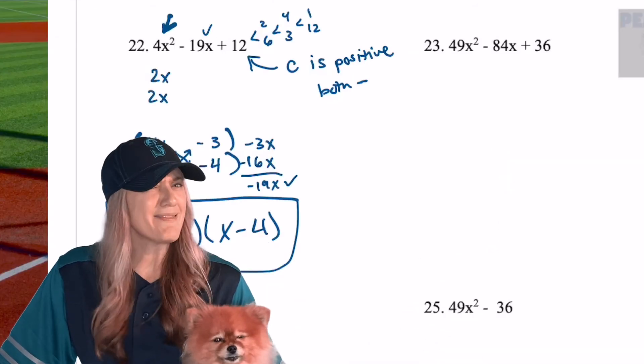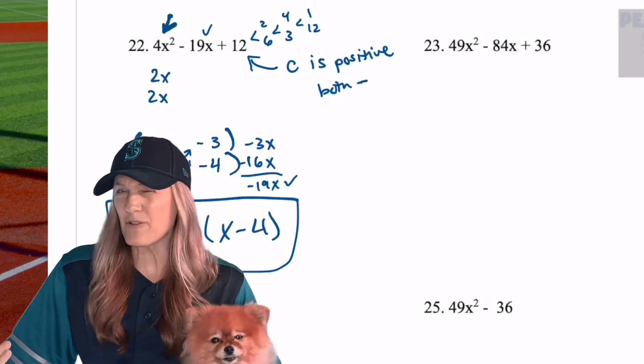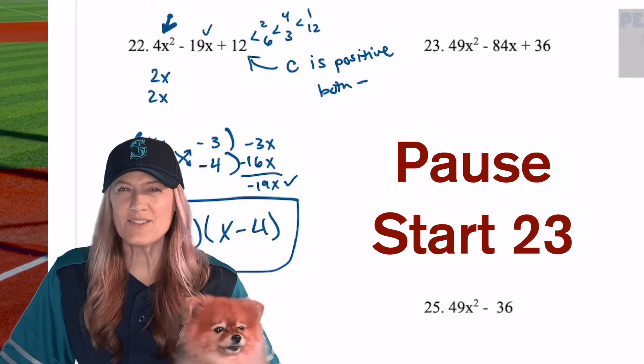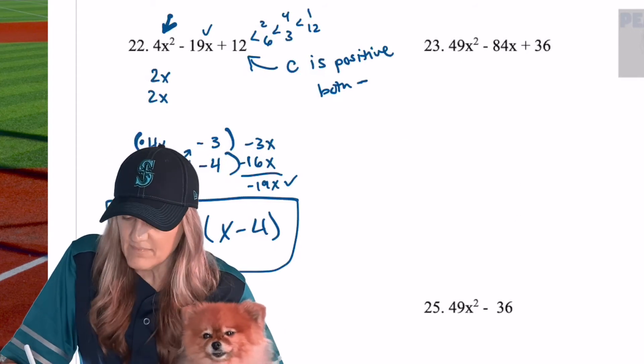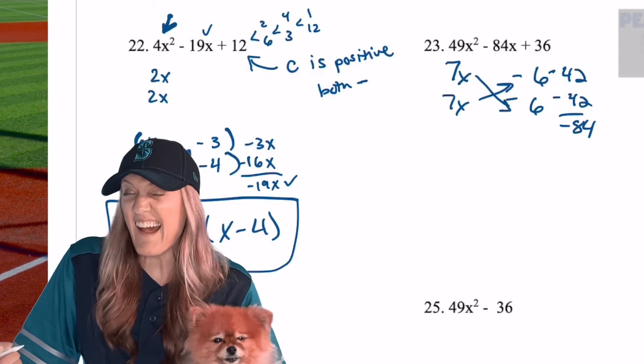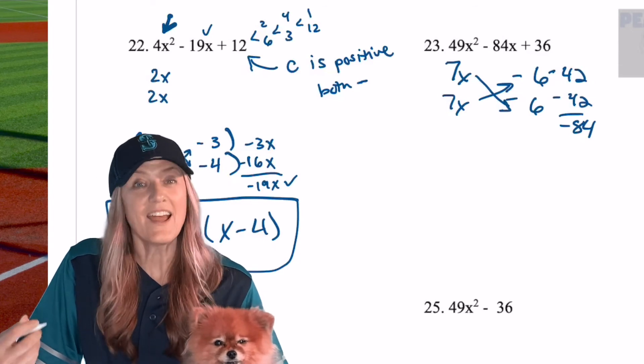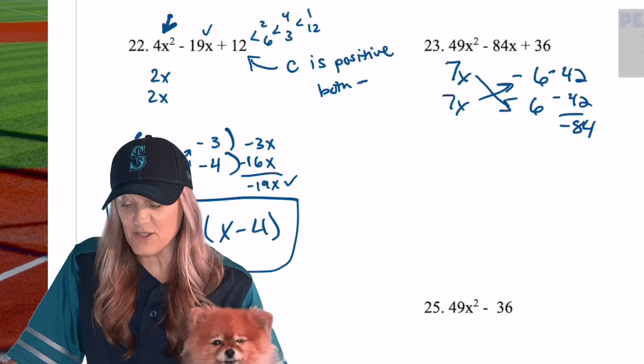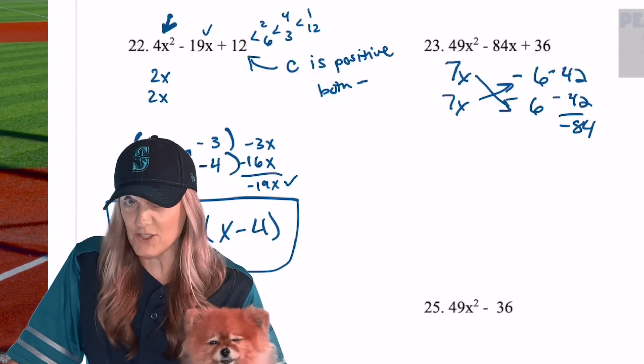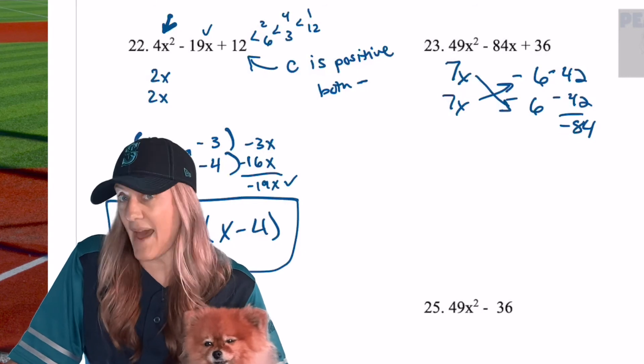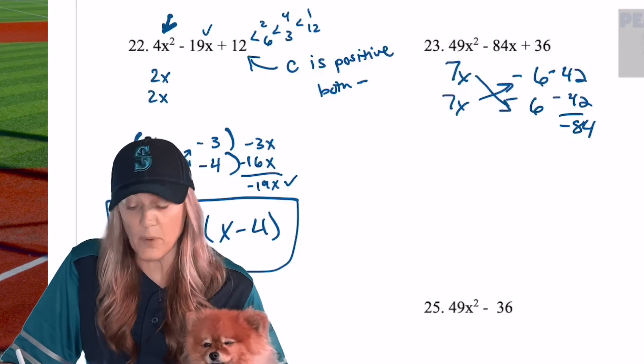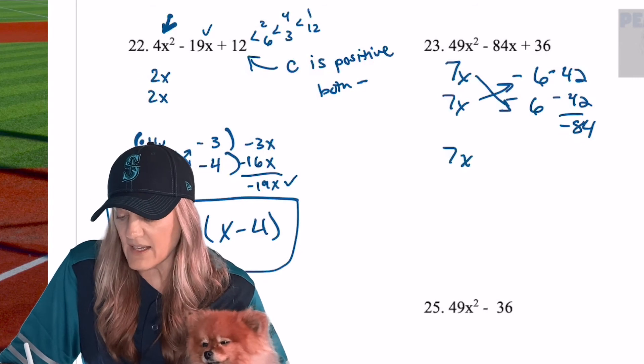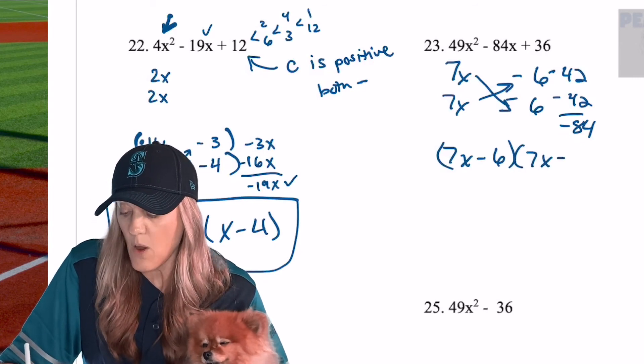23, we want to get that 84 in the middle, and we're starting with 49 for my a term. Well, I think you know where to start. Go ahead and do it, and then check back with me. Okay, I kind of knew where this was heading already, and you'll get better at recognizing it, but did you notice that our factors for a match 7 times 7, and the factors for c match 6 times 6? They're both negatives because b is negative, right? And we end up with 7x minus 6 times 7x minus 6.